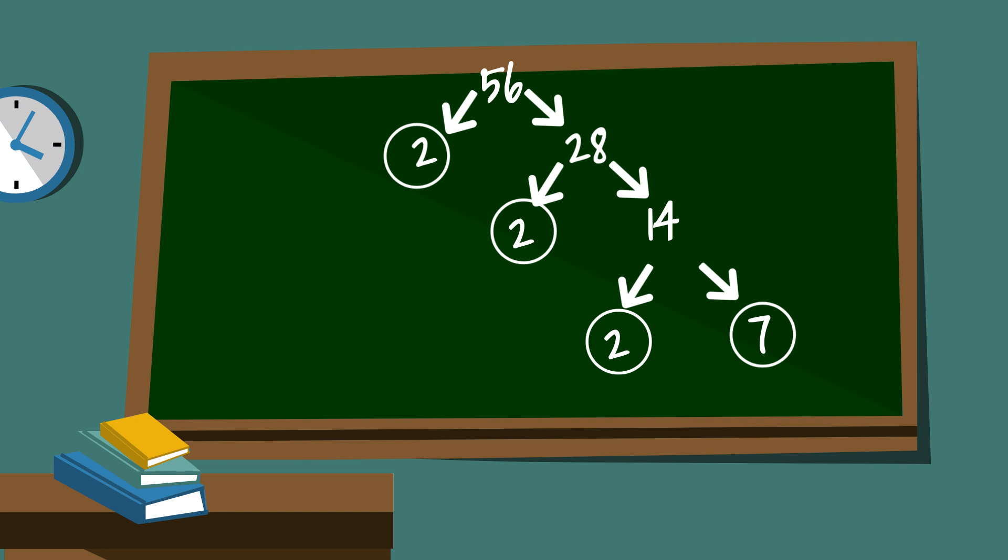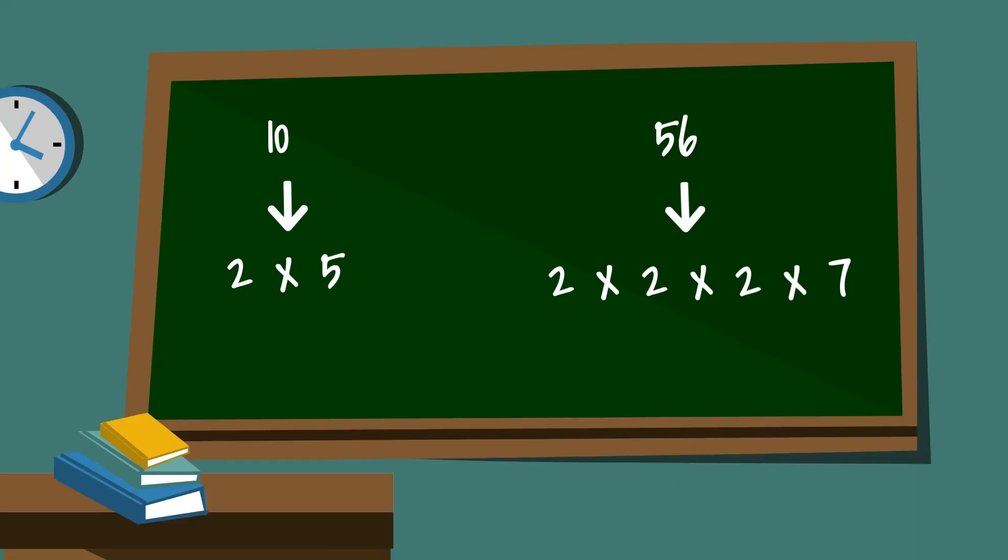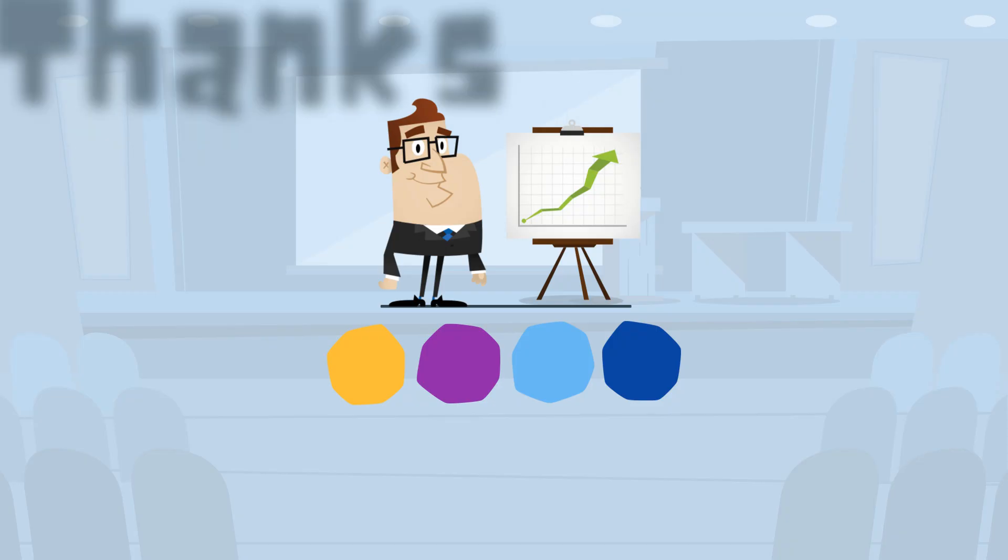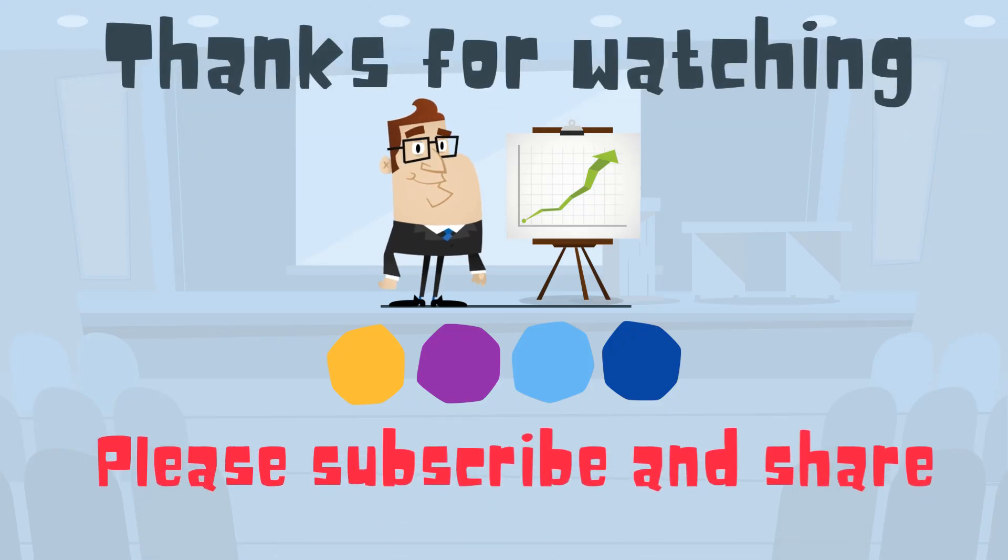So the prime factorization of 56 is 2 times 2 times 2 times 7. And here it is in exponential form. Thanks for watching and Moo Moo Math uploads a new math and science video every day. Please subscribe and share.